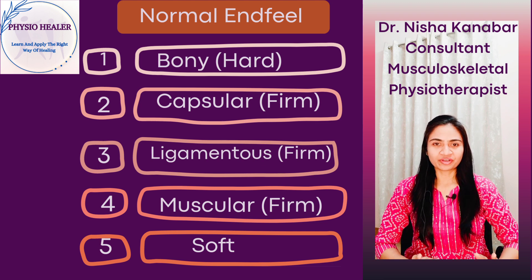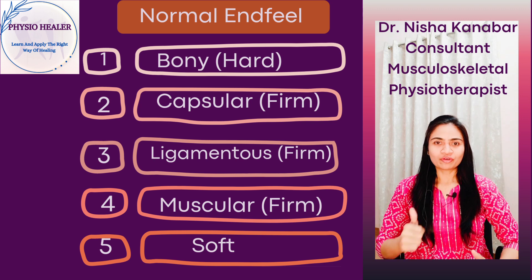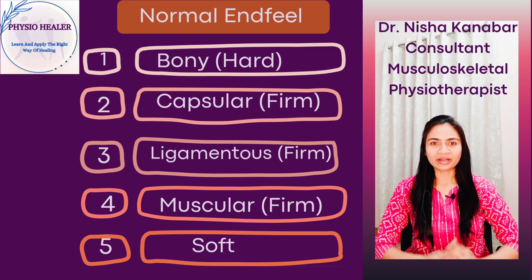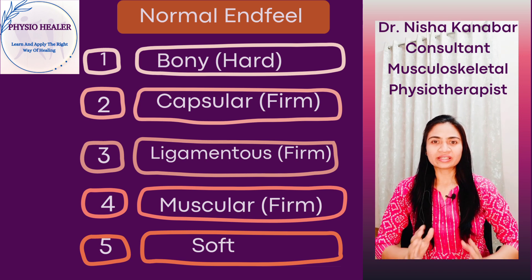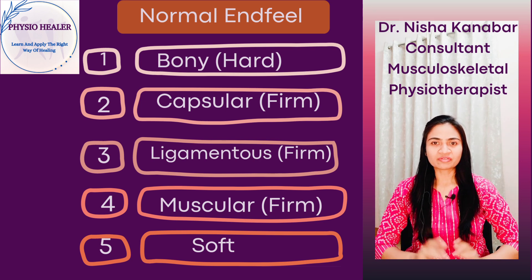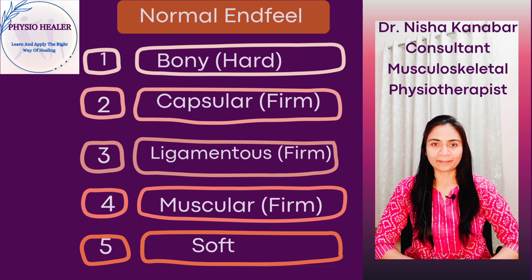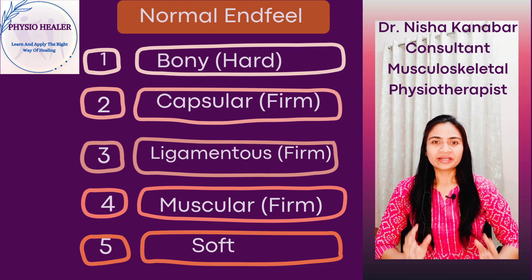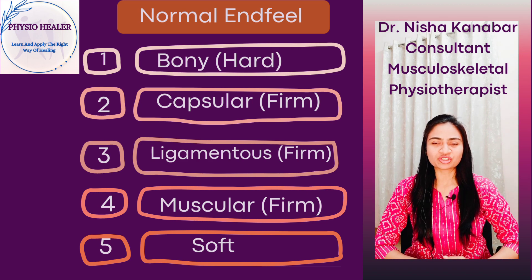Normal end feel is classified into five types. First is bony or hard end feel. Second is capsular or firm end feel. Third is ligamentous or firm end feel. Fourth is muscular or firm end feel. And fifth is soft tissue approximation or soft end feel. The firm end feels will have a little creep to them. Tissue stretch is the most common type of normal end feel, found when the capsule and ligaments are the primary restraint to movement.